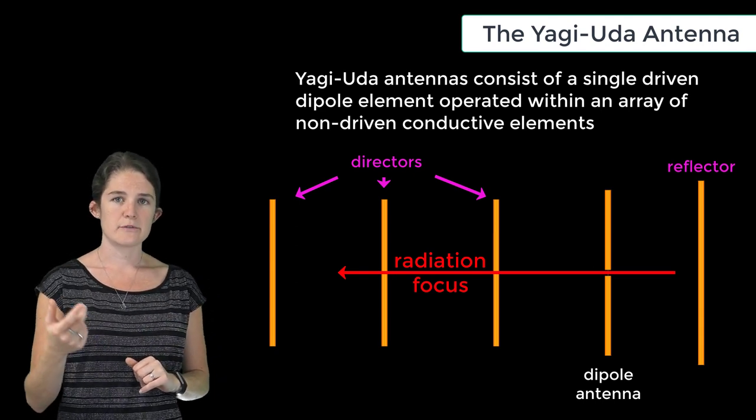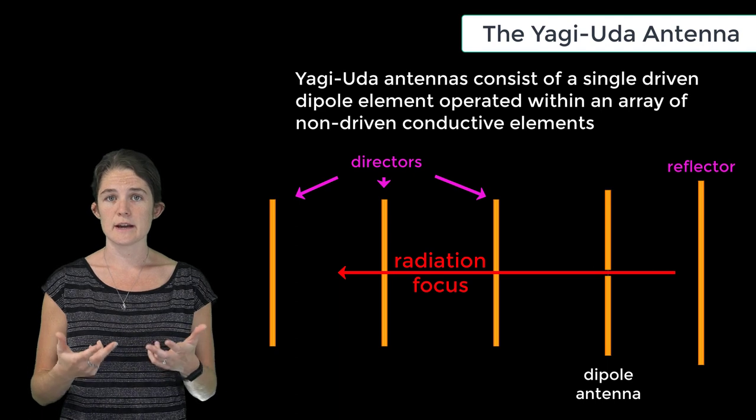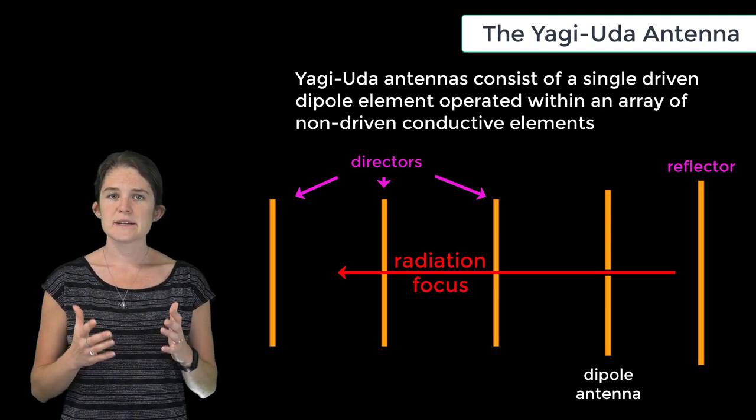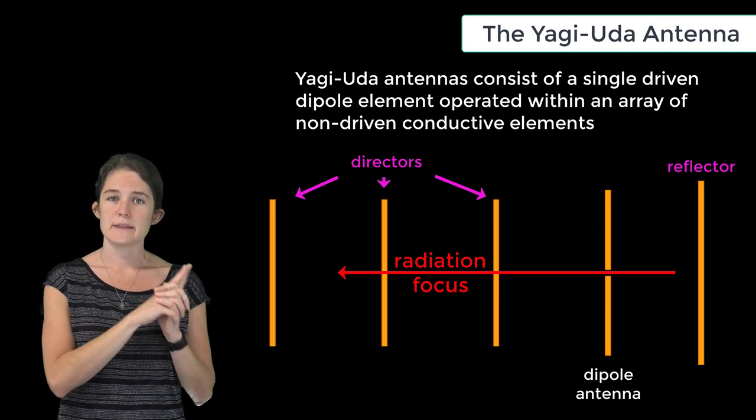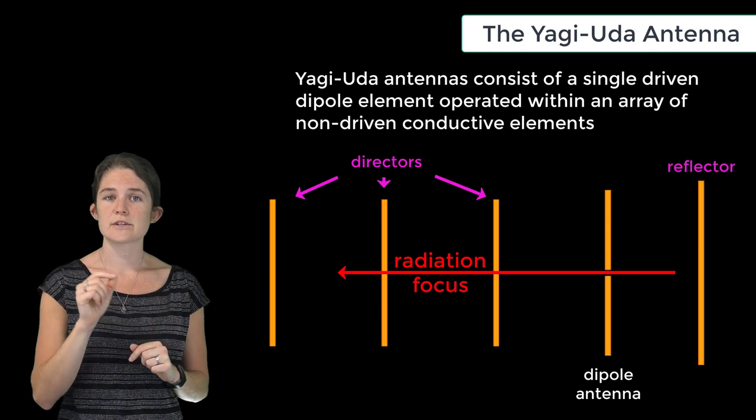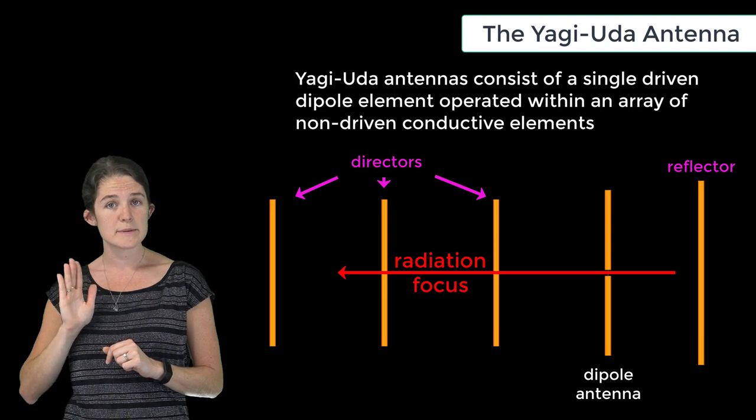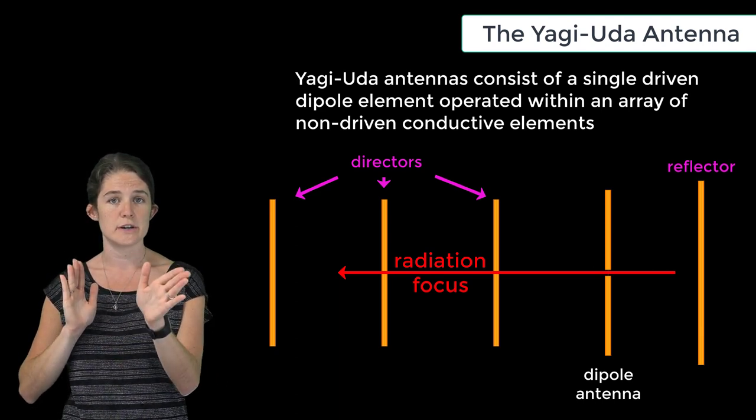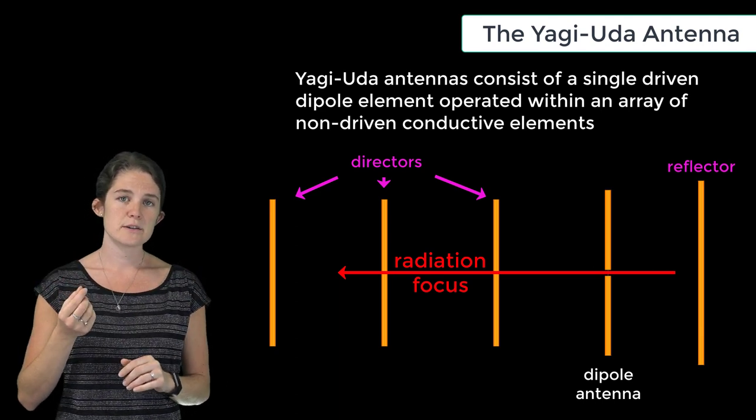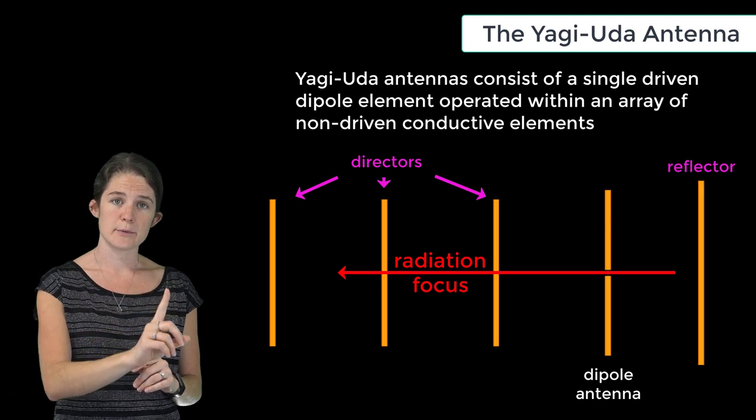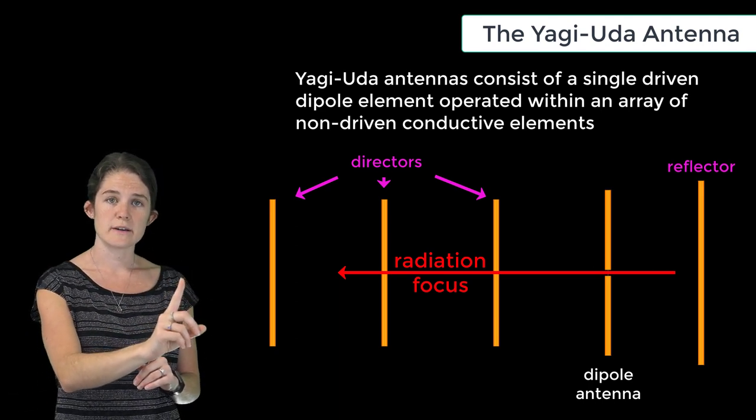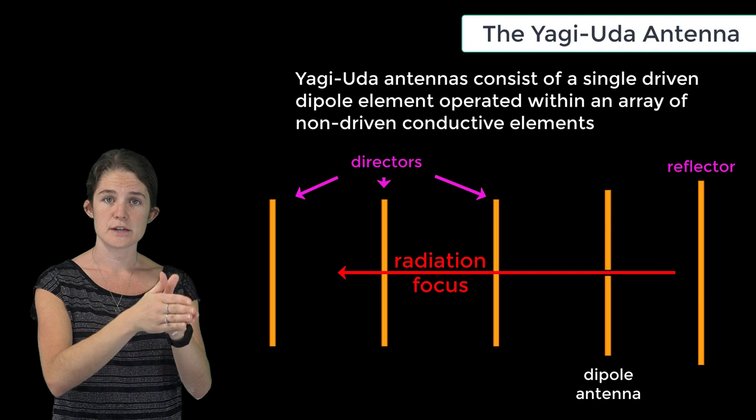The exact number of reflectors and directors in a Yagi-Uda antenna varies, but a typical design might look something like this. The reflectors are slightly longer than the dipole and are positioned behind the dipole in the opposite direction from the desired direction of radiation. The directors are slightly shorter than the dipole and are positioned in front of the dipole in the desired direction of radiation.